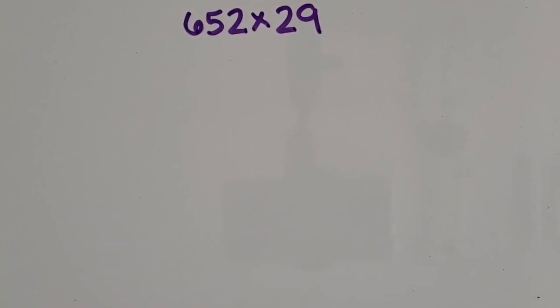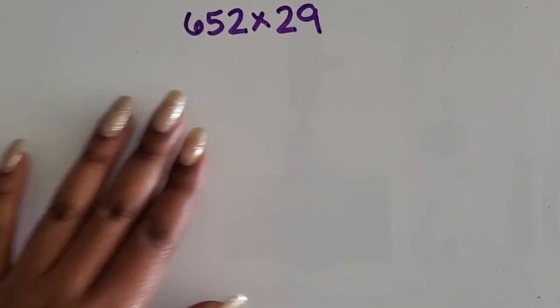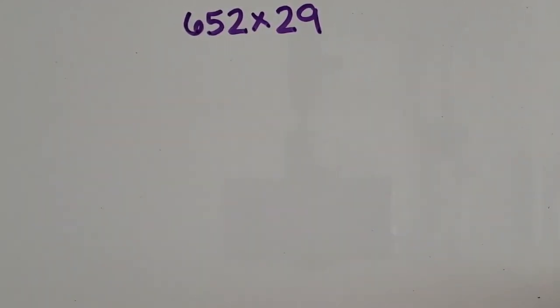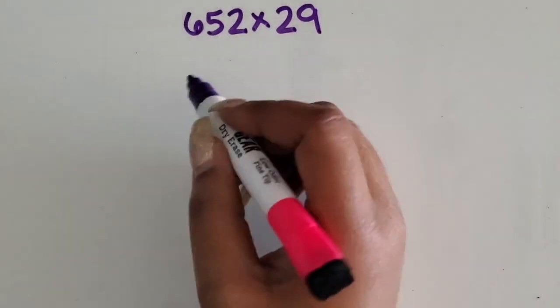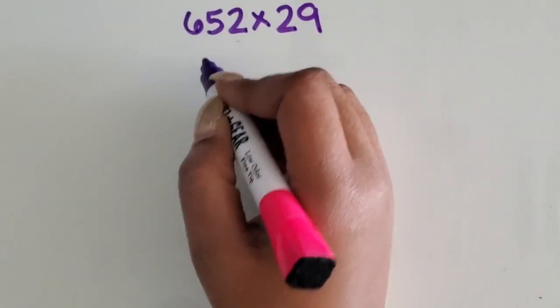However, it's not necessarily easier. If students are more comfortable using the partial product, that is perfectly fine. Here's how you do it with a 3-digit number and a 2-digit number.